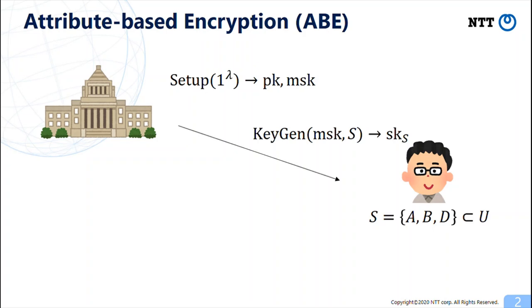The authority can issue a secret key for an attribute set S using the master secret key. In encryption, a user can encrypt a message on behalf of a formula F.